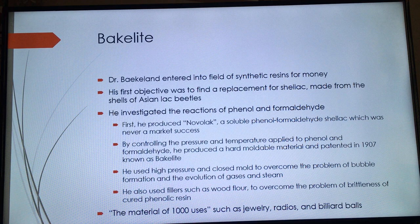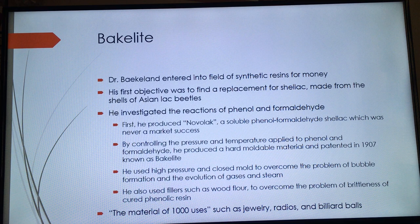By controlling the pressure and temperature applied to phenol and formaldehyde, he produced a hard, moldable material and patent in 1907, which became known as Bakelite. He used high pressure and a closed mold to overcome the problem of bubble formation and the evolution of gases and steam. He also used fillers such as wood flour to overcome the brittleness of phenolic resin.